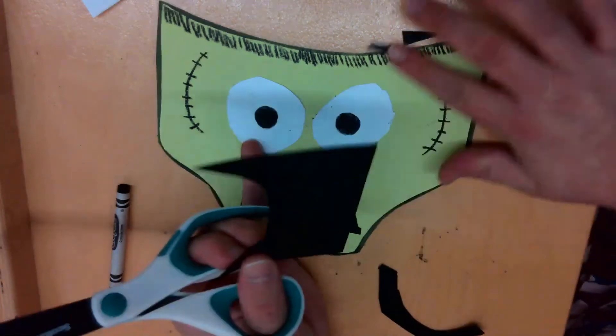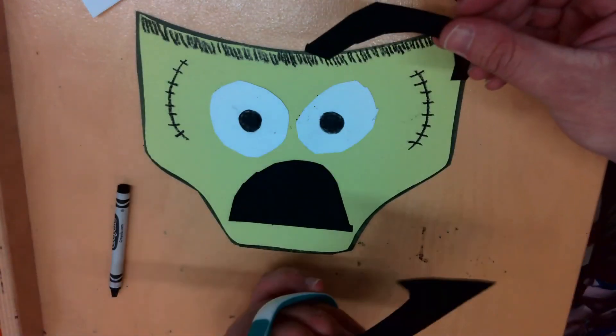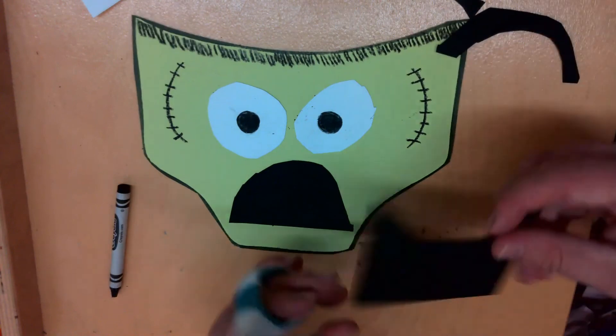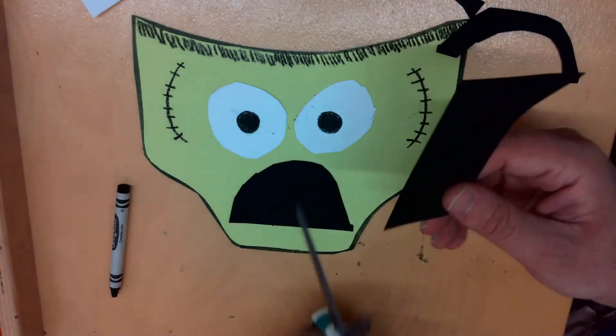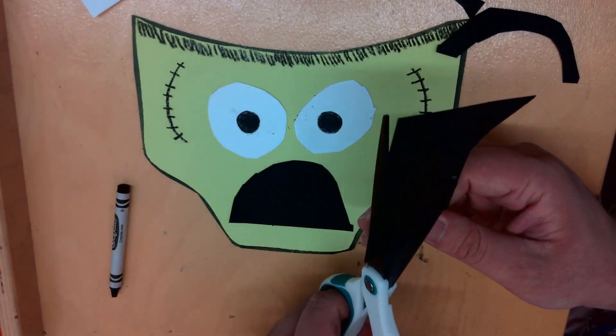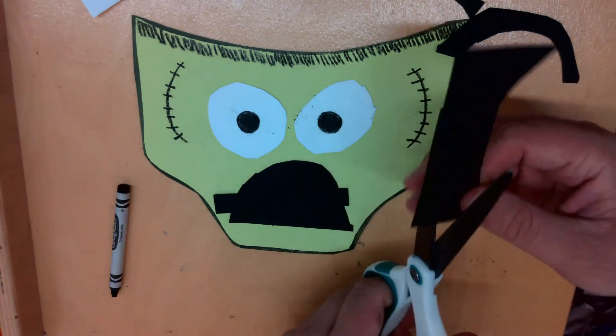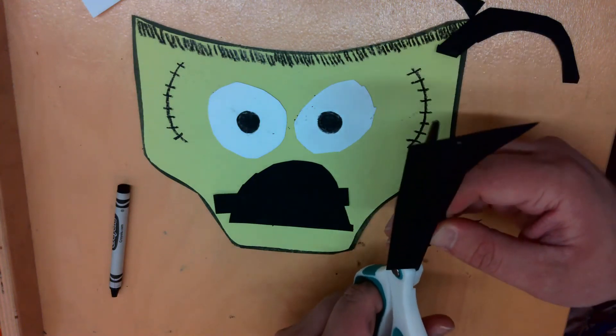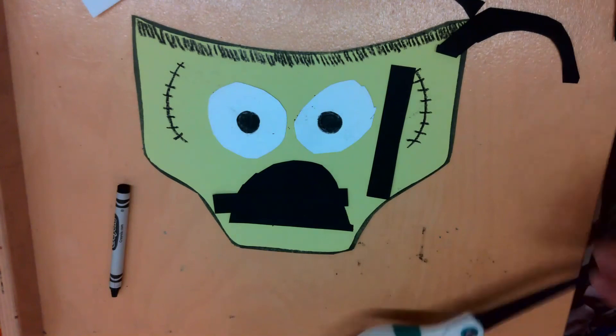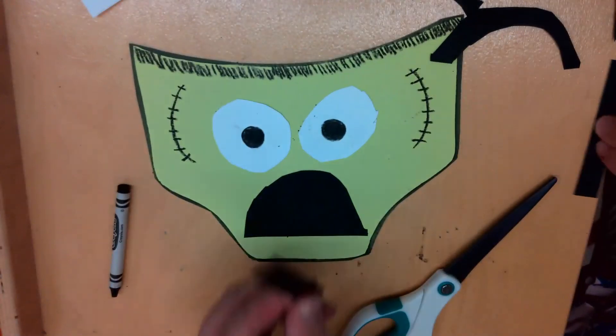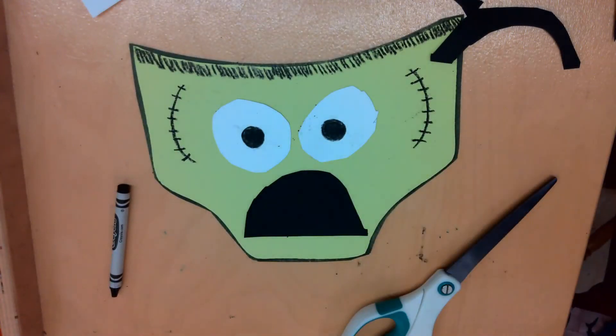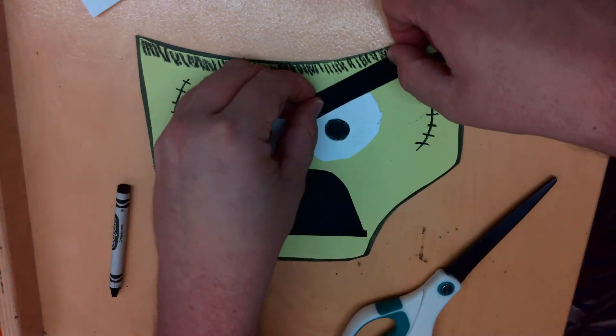If you want to make angry eyebrows, on the side that you didn't cut yet, you're just going to cut a straight line across. And like I said, I'm going to do angry eyebrows. Go ahead and get some glue on your angry eyebrows. Stick it on there.